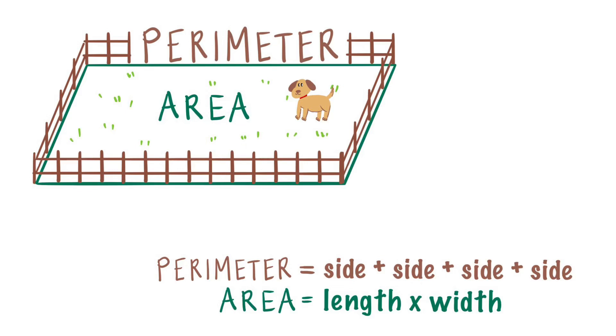Which means it's very important that we add up all of the sides of our perimeter. If we forget one of the sides, our puppy is going to run away. Remember, the formula for perimeter is side plus side plus side plus side.